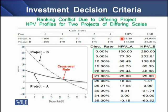Project A has an IRR of 34.9% whereas Project B has an IRR of 25.21%. If viewed as independent projects, both can be chosen as Project A has higher IRR while Project B has higher NPV. Looking at the NPV profiles, Project B's NPV profile is shown through a thick dotted line, whereas Project A's NPV profile is depicted through a thick flat line.